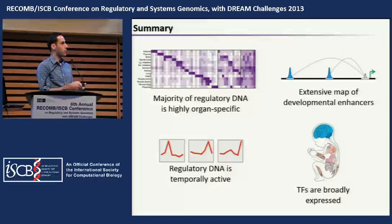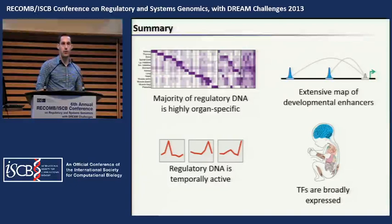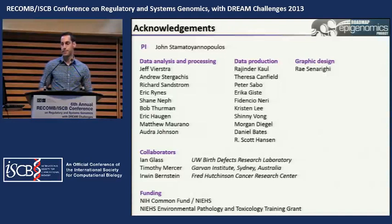To summarize: we've generated a genome-wide map of regulatory DNA active during human fetal development, a genome-wide map of enhancer-promoter connections shown to be active in the same tissues between humans and mice, characterized temporal activity patterns of DHSs, and used gene expression data to identify potential novel developmental regulators. This work is part of the Epigenetics Roadmap Consortium, and I'd like to thank the data analysis and processing team, data production, the people who did the experiments, and our PI John Stamatoyannopoulos.